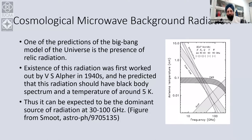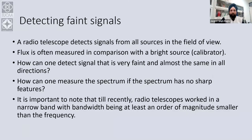There was one set of people who wanted to make good predictions and go out and try to observe it, and there were other people just doing observations not necessarily looking for microwave background. The challenge is as follows. A radio telescope, if I have a single dish, detects signals from all sources in its field of view. When you want to measure flux, it's often measured in comparison to a bright source — you look at what you want to study and then at a known source with a known flux, comparing voltages.